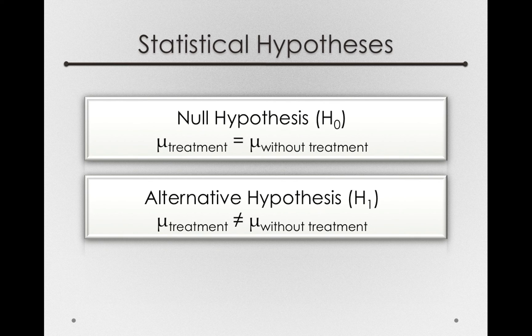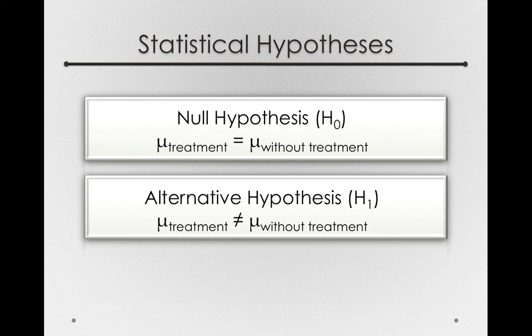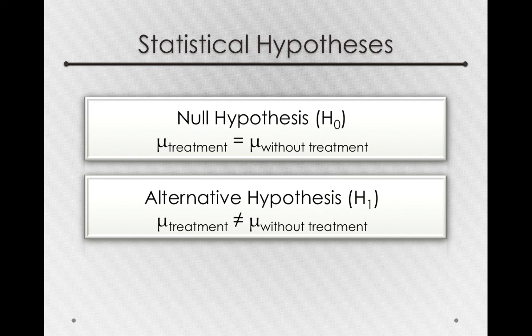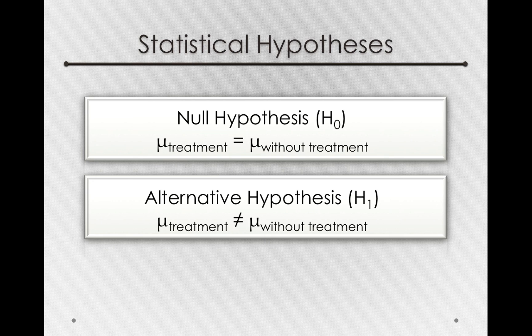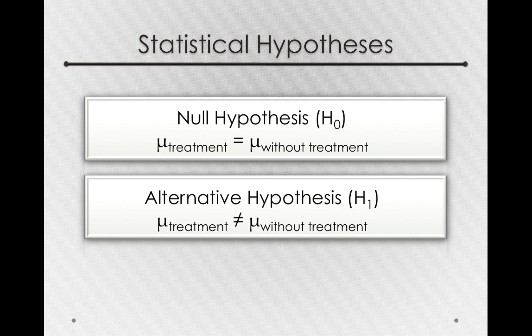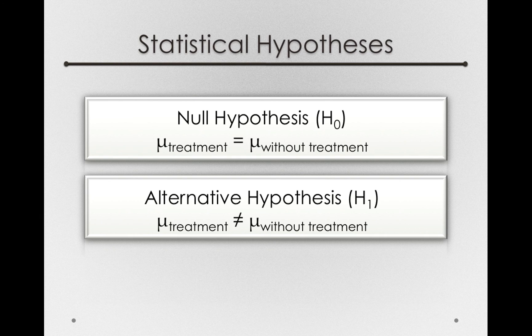Second, notice that these hypotheses do not have any sample statistics in them. We're not talking about the sample mean with treatment versus a population without treatment. Specifically, we're talking about populations that have been treated and populations that haven't. But so far, we haven't seen a population that's been treated. We've only had a sample that we've treated. So we need to step back for a second and think about our sampling scenario and what we're really trying to make an inference about.